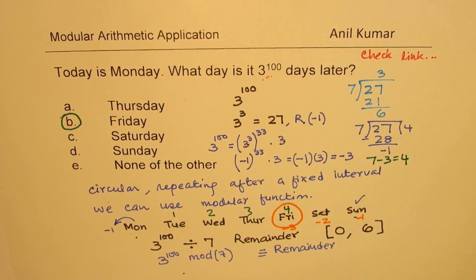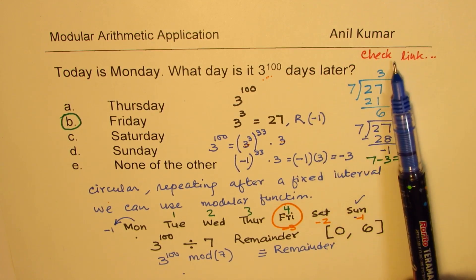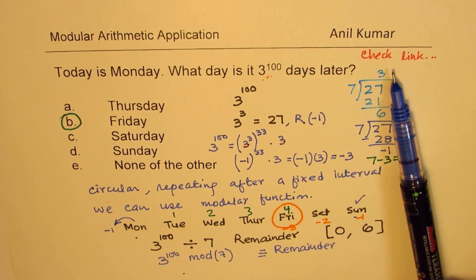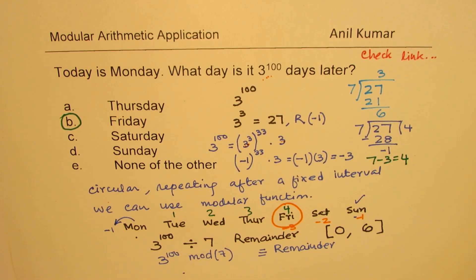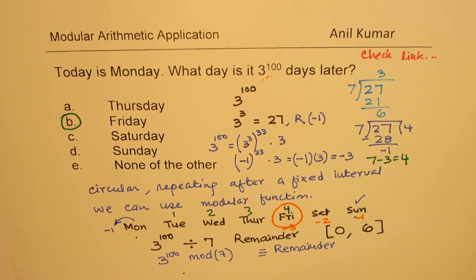If you understand this mod operation, which is very beautiful for solving such questions, you can solve these in a minute's time. So split three to the power of 100 as three to the power of three to the power of 33, times three. Minus one times three is minus three — go back three steps, get your answer. Go through the link, try to understand the concept of modular arithmetic, and I'll provide more examples for unit place and similar problems with big numbers. Feel free to write your comment, share your views, and if you like and subscribe to my videos, that'd be great. Thanks for your time and all the best.